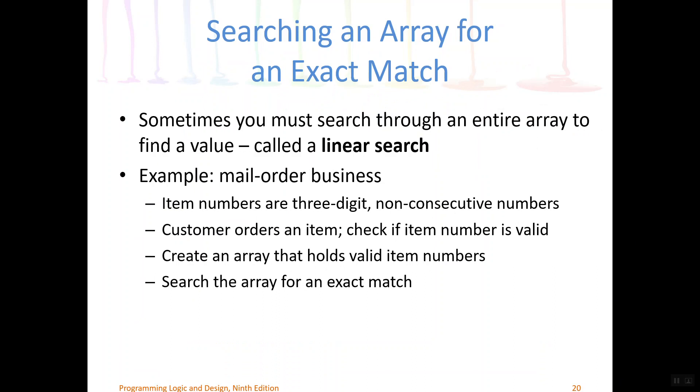Let's pretend that we had a mail order business and we kept track of our items using an item number. Our item numbers are three digits, non-consecutive, meaning they don't necessarily go in order. We want to allow a customer to order an item, indicating the item number. But first we have to check to see if that item number is valid. So we're going to create an array that holds all the valid item numbers. And then each time the customer gives us a new item number to order, we're going to check it against that array of item numbers to ensure that it is a valid item number.